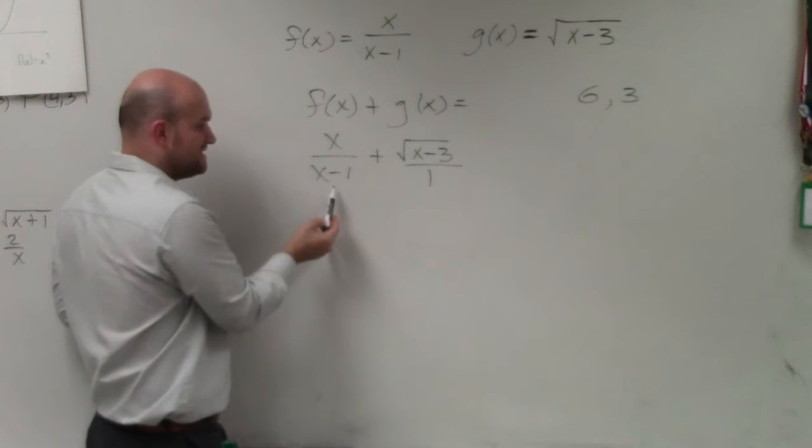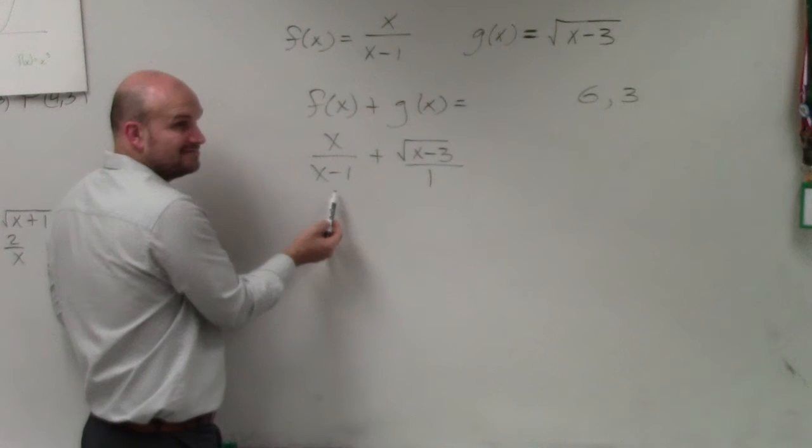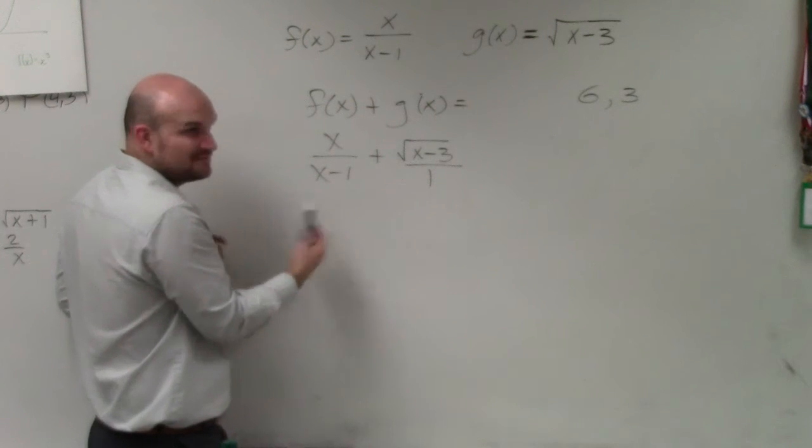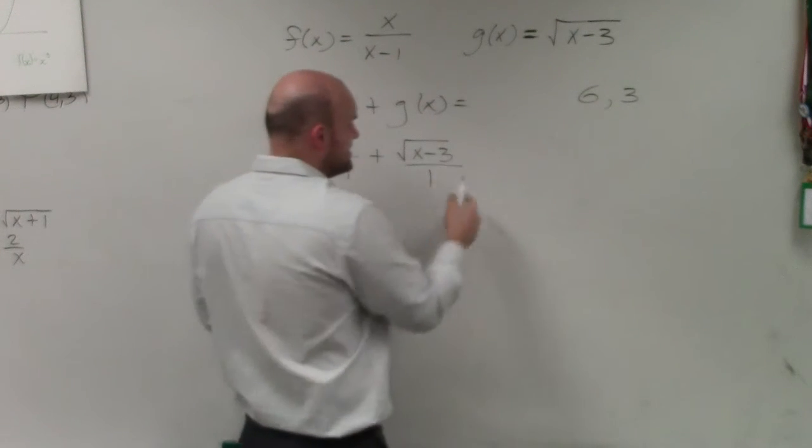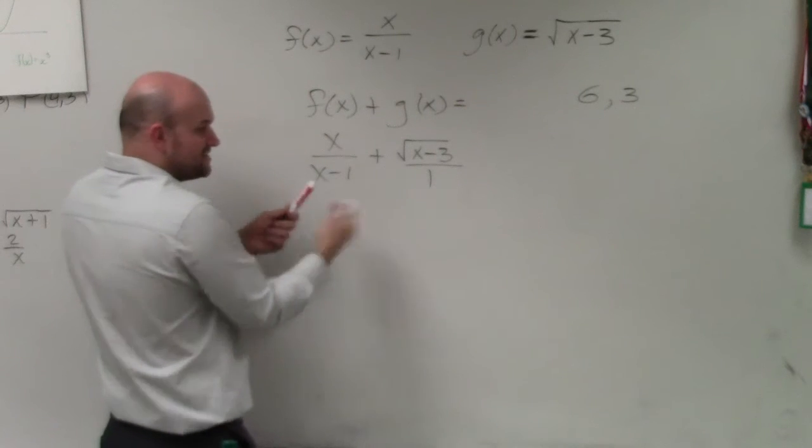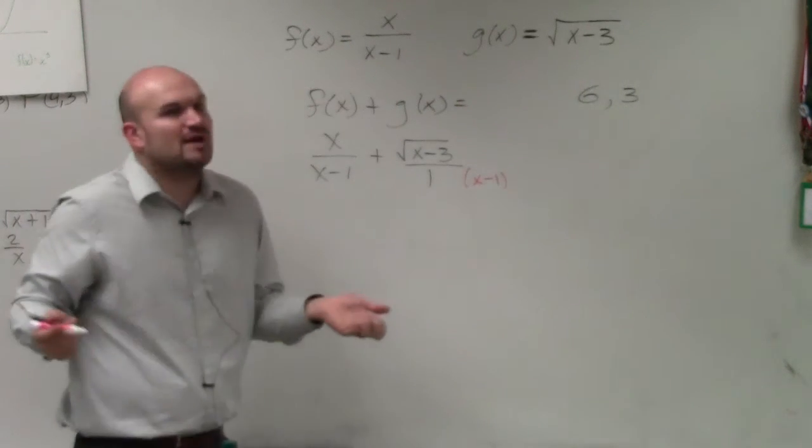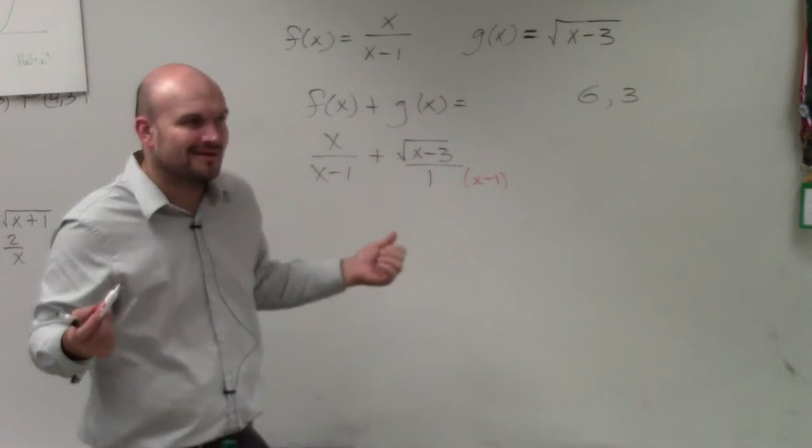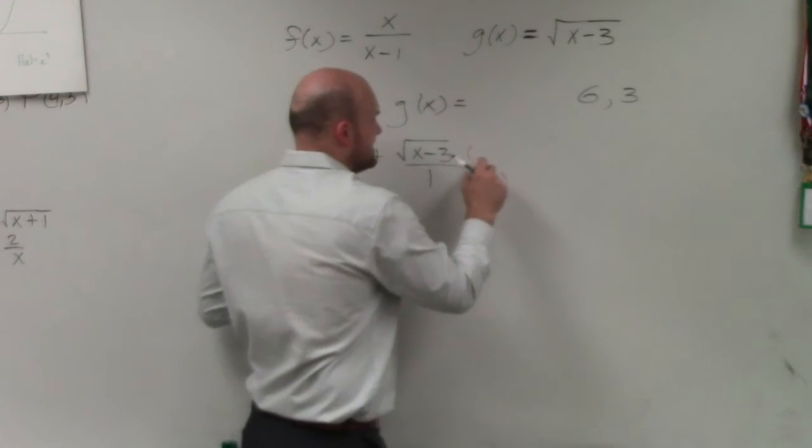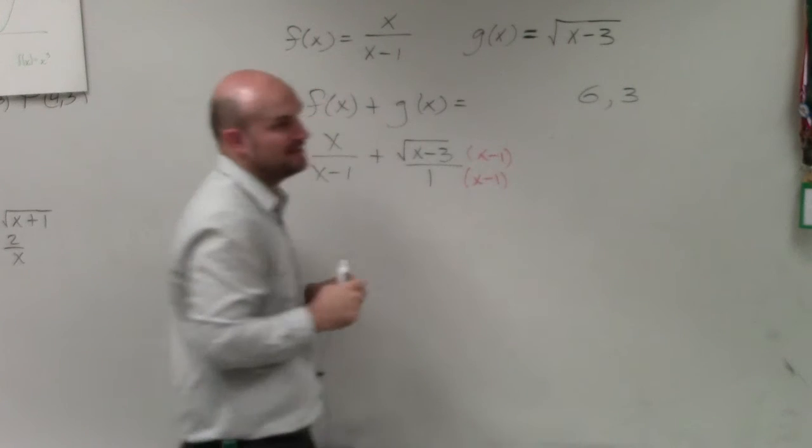So what does 1 divide into? 1 divides into all those numbers, right? What does x minus 1 divide into? x minus 1. That's the first number. So their common denominator is the product of these two, which is just x minus 1 times 1. But do we need to write x minus 1 times 1? No. So we're just going to use x minus 1 as their common denominator.